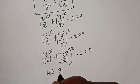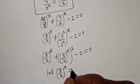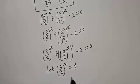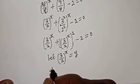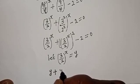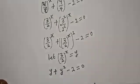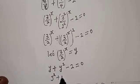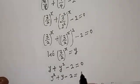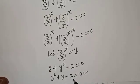Let 3 over 2 to the power of s equal y. Then y plus y squared minus 2 is equal to 0. Rearranging, we have y squared plus y minus 2 is equal to 0.